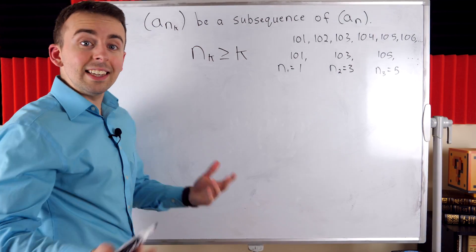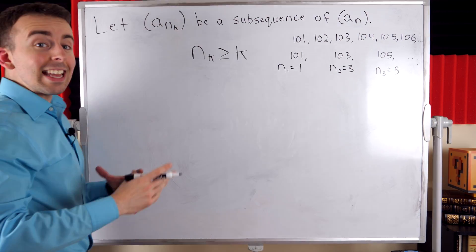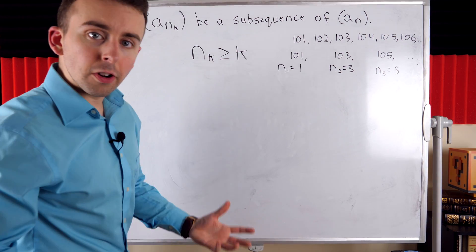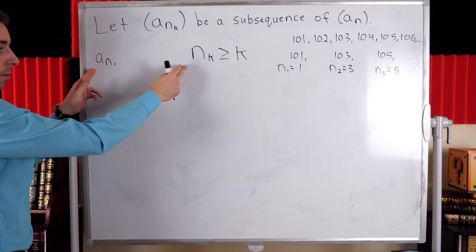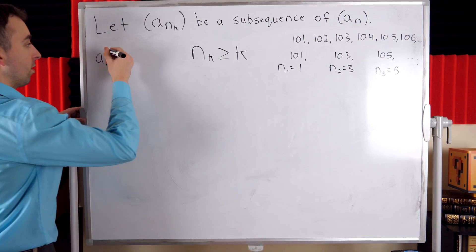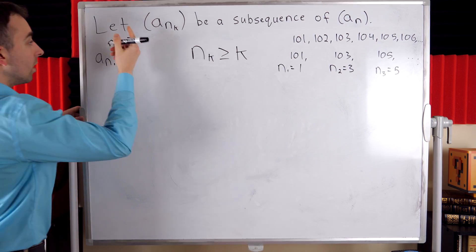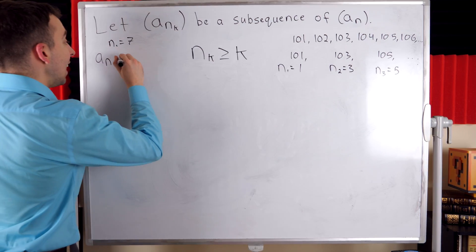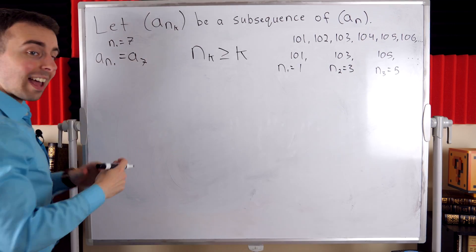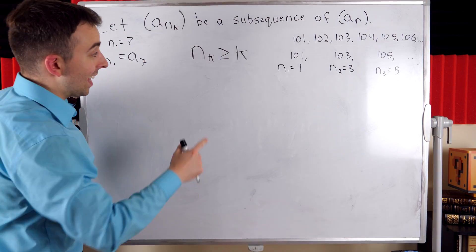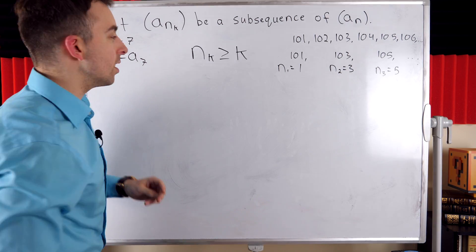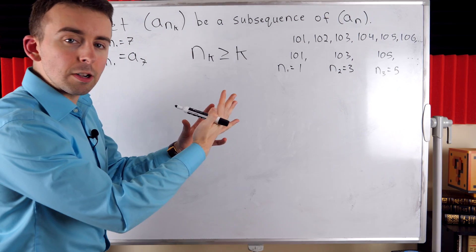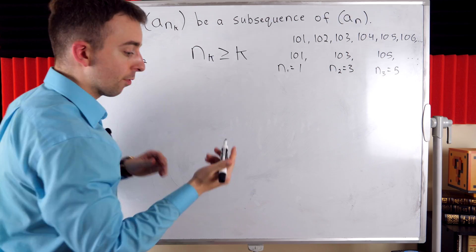Let's talk about these indices a bit more. Remember that k is indexing the subsequence, so a_{n_1} is the first term of the subsequence. For example, n_1 could equal 7, meaning a_{n_1}, the first term of our subsequence, is a_7, the seventh term of the original sequence. So k indexes the subsequence, and the value of n_k tells us the position in the original sequence from which we're drawing our term.